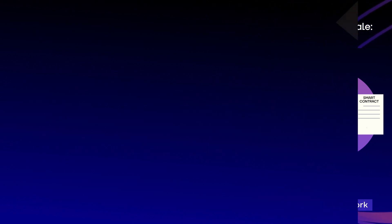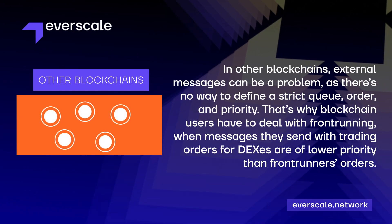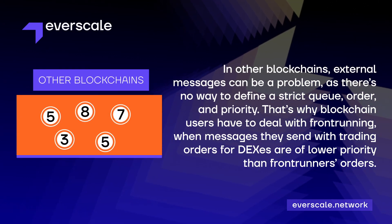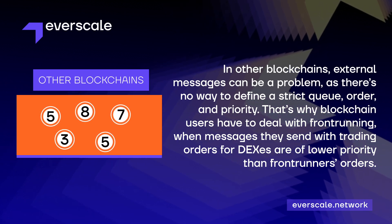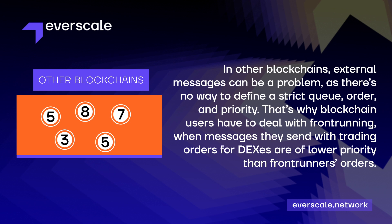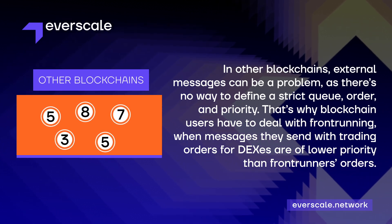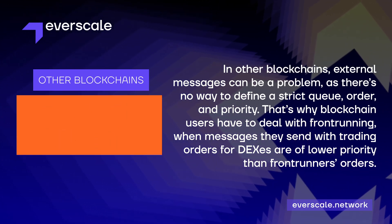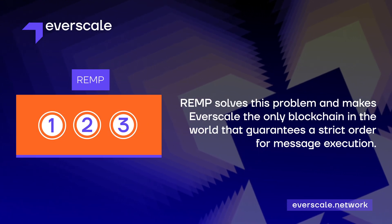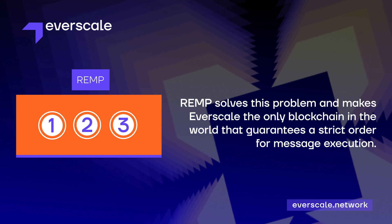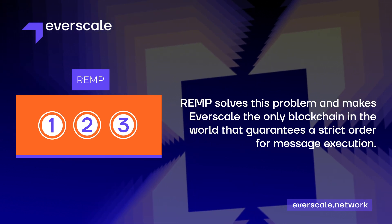In other blockchains, external messages can be a problem as there's no way to define a strict queue, order, and priority. That's why blockchain users have to deal with front running, when messages they send with trading orders for DEXs are of lower priority than front runners' orders. REMP solves this problem and makes Everscale the only blockchain in the world that guarantees a strict order for message execution.